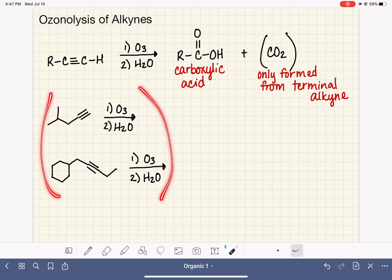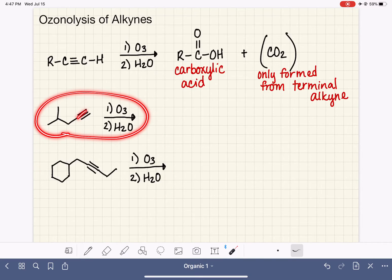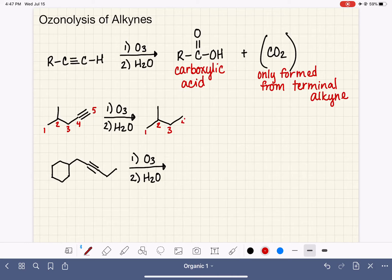Here are a couple of examples of ozonolysis. So this first one, we're working with a terminal alkyne. That means that we will be producing CO2. It's really important that you keep track of your carbon atoms in these reactions. So when we split this molecule in half at the carbon-carbon triple bond, we're going to end up with four carbons in one of our products. And that carbon number four is going to be the location of our carboxylic acid functional group. And then our other product from the terminal part of this is going to be CO2.